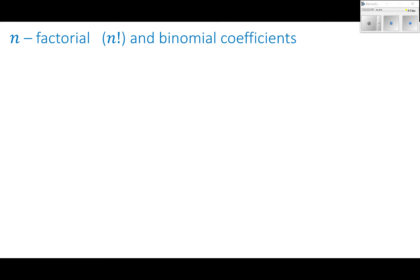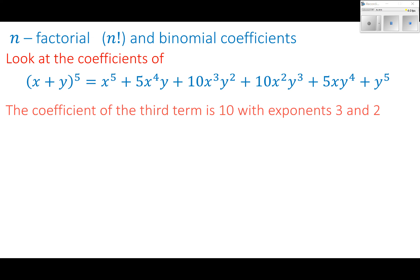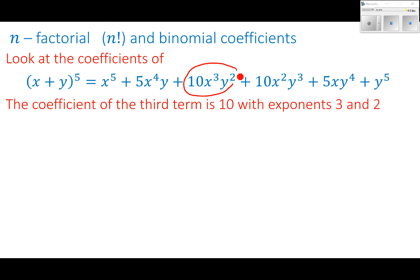Alright, so let's do some work with the n factorial and our binomial coefficients. So again, let's look at the coefficients of this long one. So x plus y to the 5th is this big, long expansion. The coefficient of the third term, so this third term we're looking at is right here, is 10 with exponents 3 and 2. So this factorial will help us find that coefficient. Well, we know the coefficient is 10, but let's show that that coefficient is 10. If I were to work this out, if I did 5 factorial divided by 4 factorial times 1 factorial. Oh, back this up, it's exponents 3 and 2. So 5 factorial, 3 factorial, 2 factorial. If I work all this out, I get 10, which is what I want. That is my coefficient.